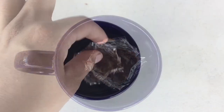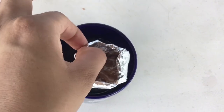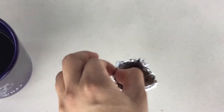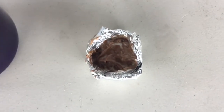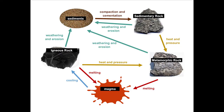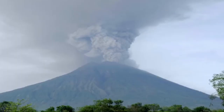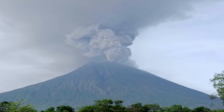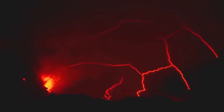We are now going to carefully take it out and let it cool completely to form our igneous rock. Igneous rocks form when magma cools. When a volcano erupts, magma rises to the earth's surface, which becomes lava. When lava cools, it creates igneous rocks.